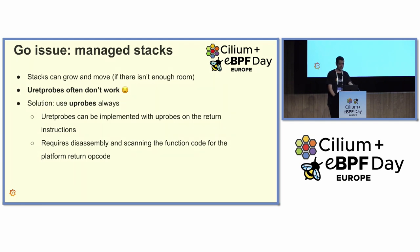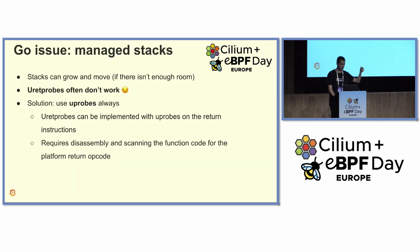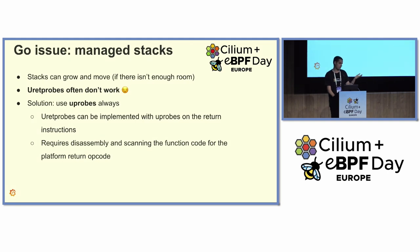To handle this, instead of using U-ret probes, we need to use U-probes only. To know when a function ends, we parse the binary code of the program, look for return instructions, and attach U-probes on each return instruction. That way we can know when a function ends without letting our program crash — which is what was happening before.